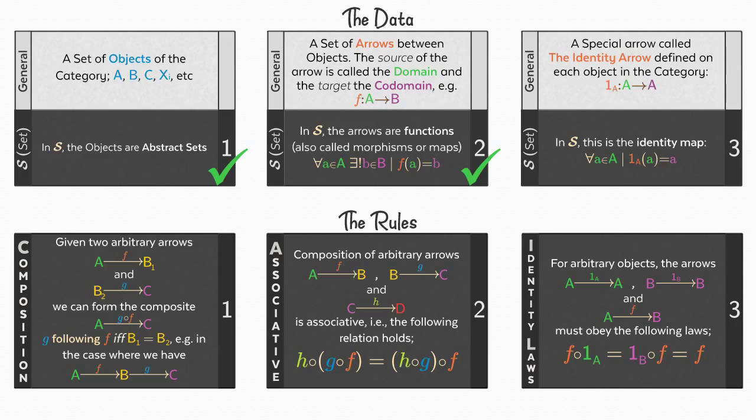Last time, we gave the definition of a category in general and a category of abstract sets and arbitrary mappings specifically. We saw that the definition consisted of two parts: the data of the category and the rules these data must follow. We discussed the objects and arrows in S, then immediately began to build our own concrete category based on S — Music S.